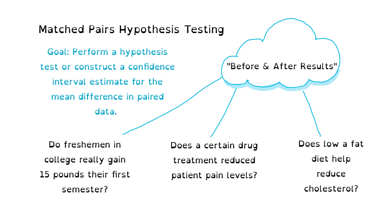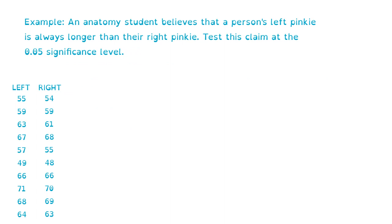Note that this is not the same as analyzing the difference in two population means, which we've already done. Let's do an example of a matched pairs hypothesis test. Suppose an anatomy student believes that a person's left pinky is always longer than their right pinky. Test this claim at the 0.05 significance level.